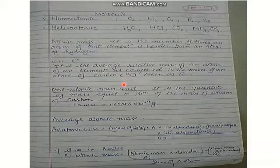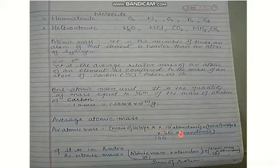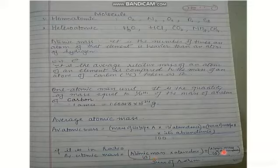One atomic mass unit (AMU) is the quantity of mass equal to one-twelfth of the mass of a carbon-12 atom, and 1 AMU = 1.66056 × 10⁻²⁴ grams. To find the average atomic mass, if abundances are given in percentages, use: average atomic mass = (mass of isotope A × abundance + mass of isotope B × abundance) / 100. If abundances are given as ratios, divide by the sum of the ratios instead.